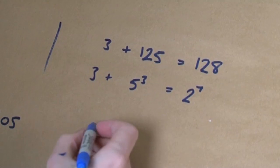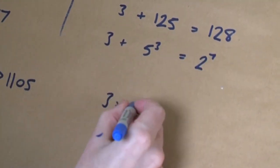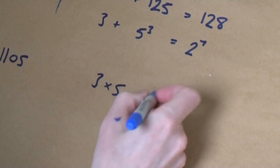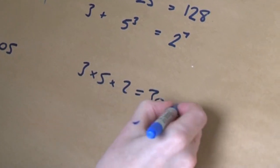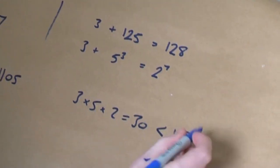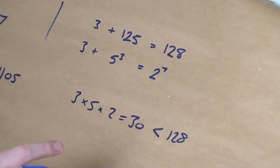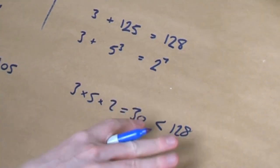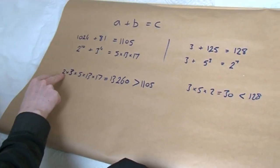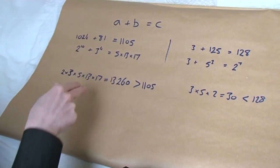I want to show you this one that I said was unusual. If we do the same thing, 3 times 5 times 2, that's equal to 30. And that's smaller than 128. So that's the difference. This is unusual. This is much smaller than the right-hand side. This number, which when you multiply the primes together, is called the radical of ABC.